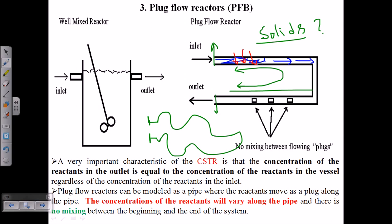The microorganisms utilize the nutrients present in the sludge and convert it into compost. Most of the time, we don't need to add microorganisms from outside because the sludge already contains them. We simply provide a suitable environment that helps convert the sludge into non-toxic solid material.